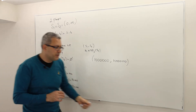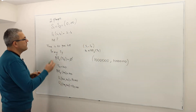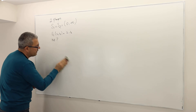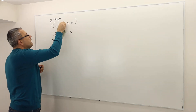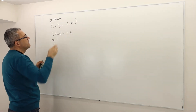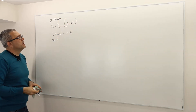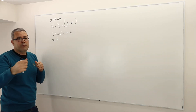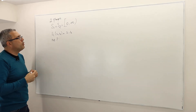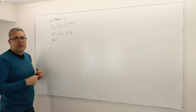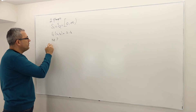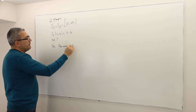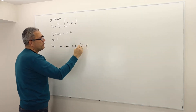If I change this game slightly — instead of saying you're allowed to choose any positive number, what if I tell you that you could choose zero or any number higher than zero — what would be different? Well, this time the same question: is there a Nash equilibrium? The answer is yes, and the unique Nash equilibrium is both players playing zero.